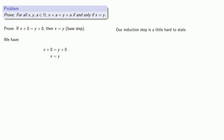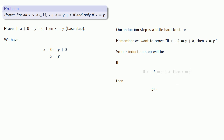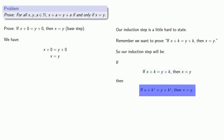Our induction step is a little hard to state, but it's important that we get it right because it'll help structure our proof. We want to prove that if x plus k equals y plus k, then x equals y. The induction step is: if our statement is true for k, then it will be true for the next one. So our induction step will be: if x plus k equals y plus k implies x equals y, then x plus k* equals y plus k* implies x equals y.